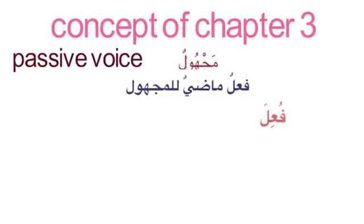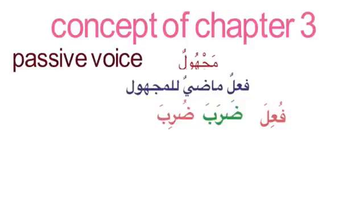What we need to remember in majhul is the vowel sign on the ayin kalima. That is the most important thing you need to know: the vowel sign on the ayin kalima and what comes before it. In the three-letter form it will be fu'ila - ayin kalima has kasra and fa kalima has damma. Examples: daraba becomes duriba, kataba becomes kutiba.